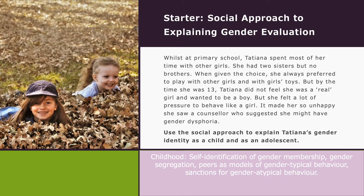For example, that would be calling a girl a tomboy if she wanted to play football. And then in adolescence, gender typicality — adolescents compare themselves to their peers and judge how gender-typical they are. They also have this felt pressure for gender conformity. When they don't conform to their gender, they feel immense stress and it could lead to gender dysphoria.